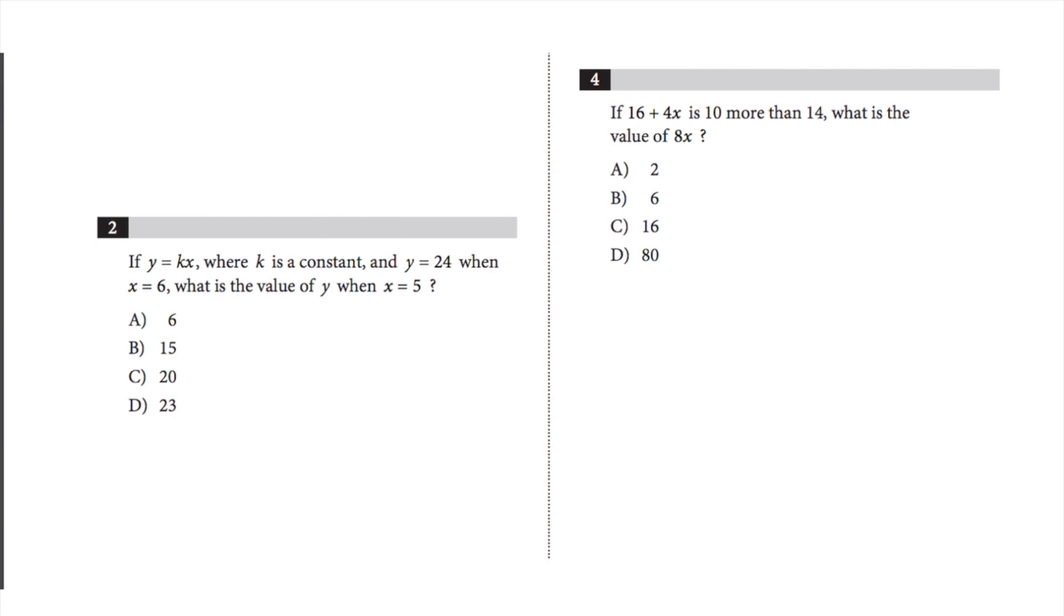Now, once you're at a point where you can solve every question, to get an 800, you need to make sure that you get every single question 100% right. And you do this by checking your work. One of the great ways to check your work is called plugging the answer in backwards. This works especially well with algebraic questions.